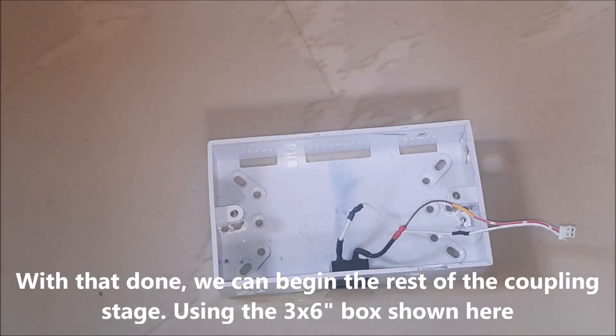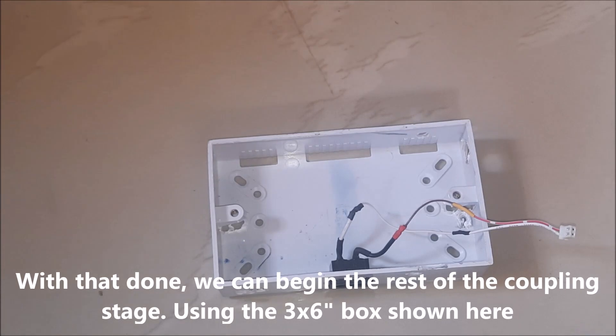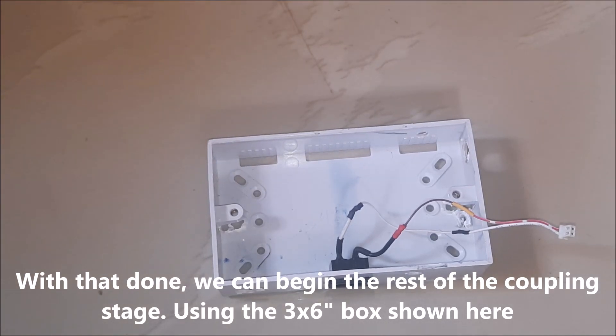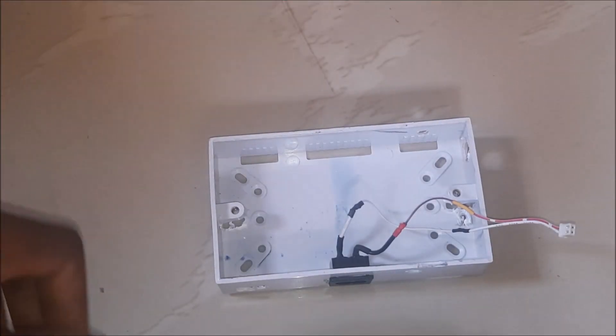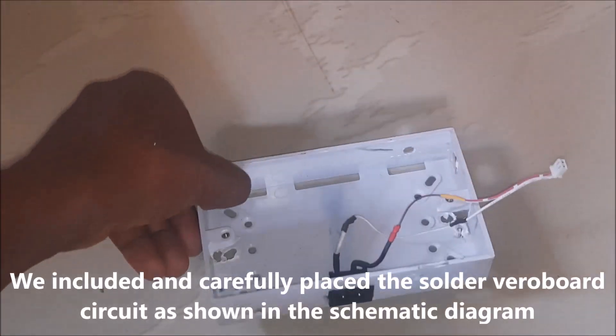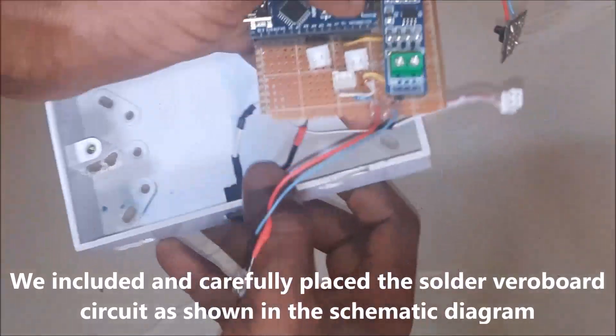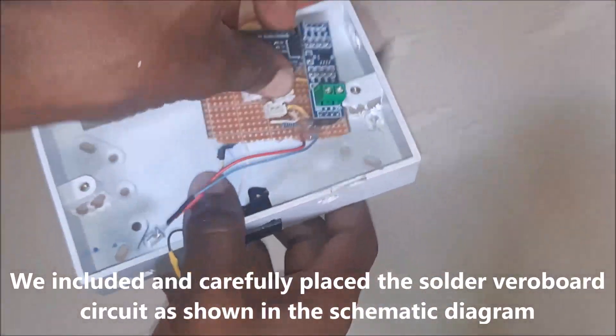With that done, we can begin the rest of the coupling stage using the 3x6 box shown here. We include and carefully place the soldered veroboard circuit as shown in the schematic diagram.